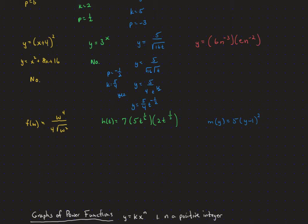The next one takes a little work too. These are all multiplying each other, so we can rearrange them so that the 6 and the e multiply each other, and the n to the negative 3 multiplies the n to the negative 2 — we'll add those exponents and get n to the negative 5. Remember, e is a number, not a variable. So yes, this is a power function. Our k — the coefficient — is 6e, and our p — the exponent — is negative 5.